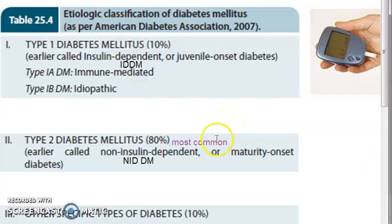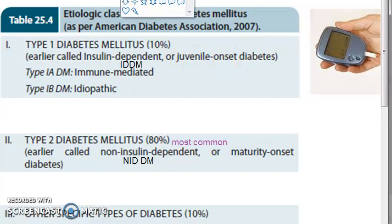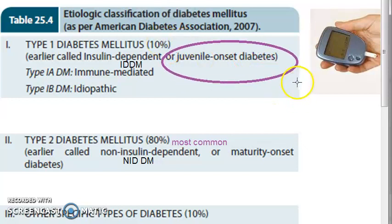Let us go into the details of type 1 diabetes mellitus. It represents just 10 percent of cases. Earlier it was called JOD - juvenile onset diabetes - because it occurs more in younger people. It is insulin dependent.